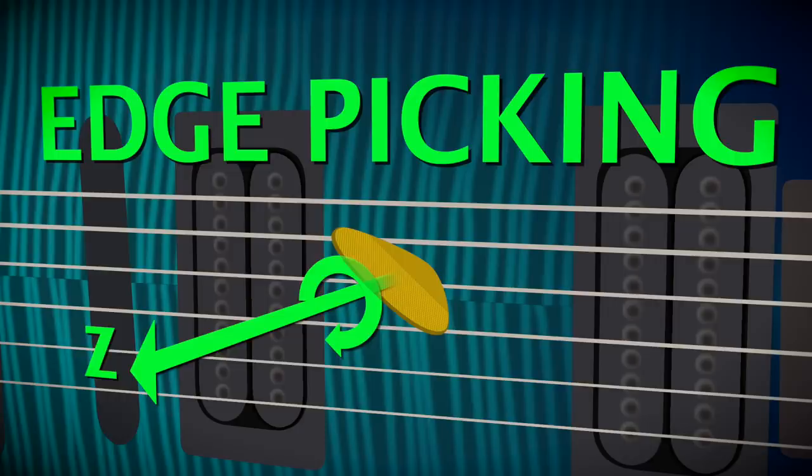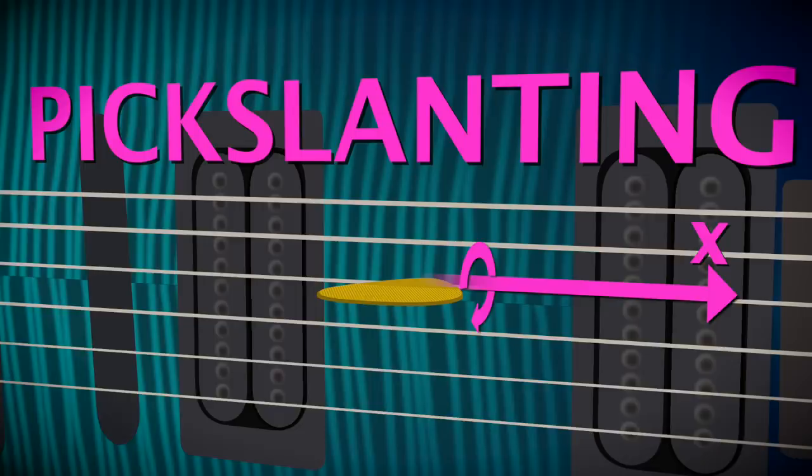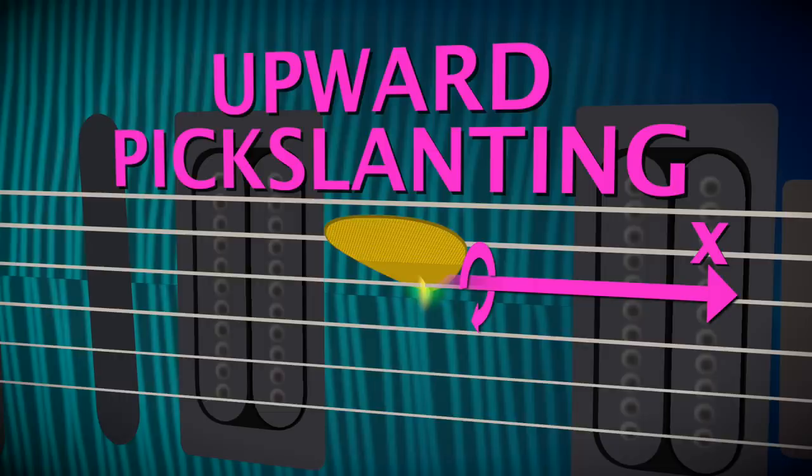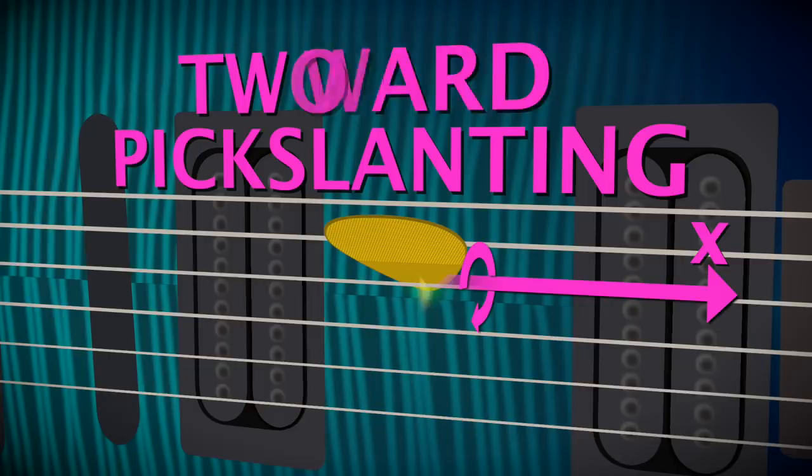Frank uses it, but this is not pick slanting. And not what he's talking about here. Instead, pick slanting is the x-axis. If the body of the pick is stuck to the strings like a hinge, then slanting it down produces the downward pick slant, and slanting it up produces the upward pick slant. And slanting in both directions, like Frank does, where he sometimes uses the downward slant and sometimes uses the upward slant, is what we call two-way pick slanting.